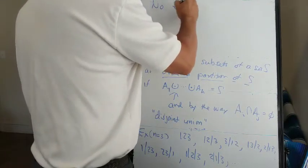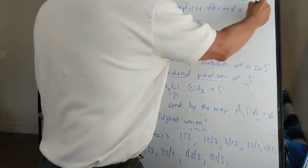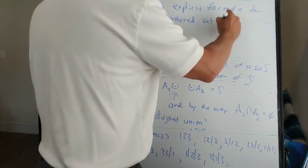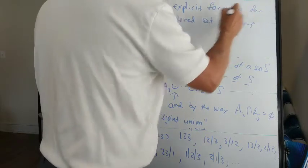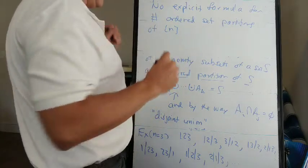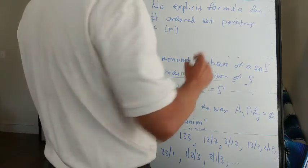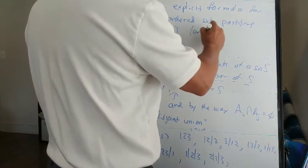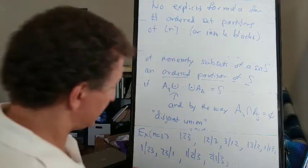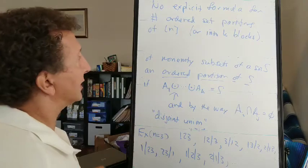And there's no explicit formula for the number of ordered set partitions of 1 through n, or even the number of ordered set partitions into a certain number of blocks. But if we fix the cardinalities of those blocks, then we can come up with a formula.